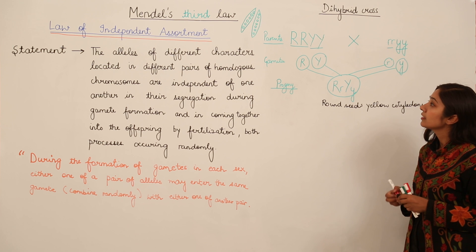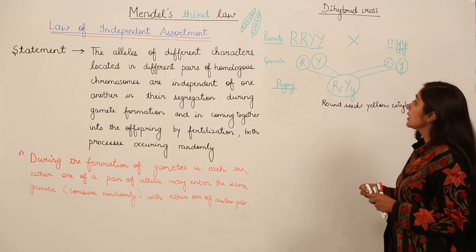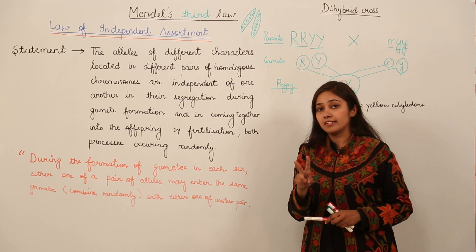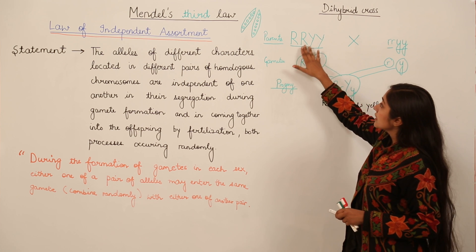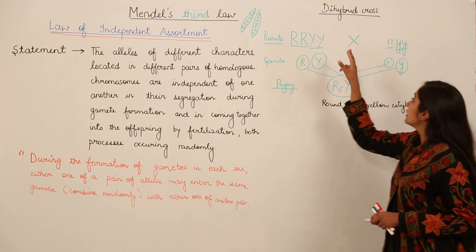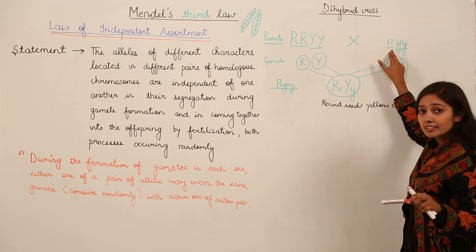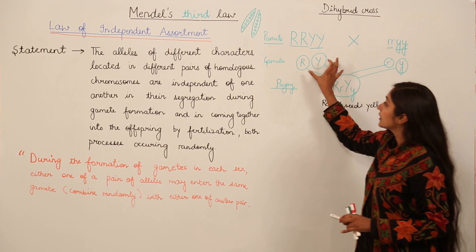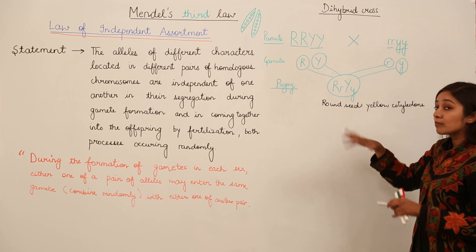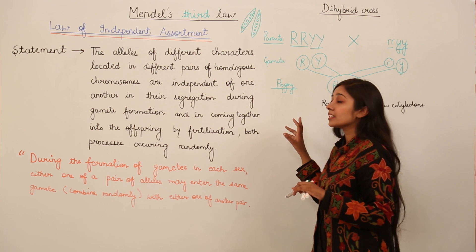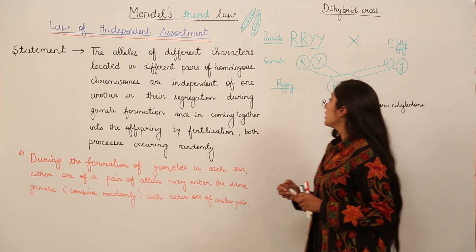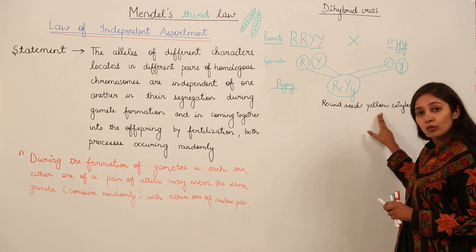So we have round seeds and yellow cotyledons in the F1 progeny. Mendel in his dihybrid cross took two characteristics at a time — he took a plant having round seeds and yellow cotyledons and crossed it with a plant with wrinkled seeds and green cotyledons. The F1 progeny, from superficial appearance, will have round seeds and yellow cotyledons, because the dominant allele is expressed.